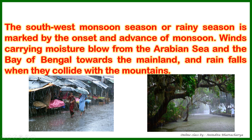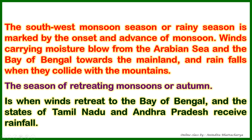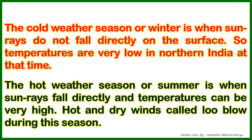The southwest monsoon season or rainy season is marked by the onset and advance of monsoon winds carrying moisture. They blow from the Arabian Sea and Bay of Bengal towards the mainland, and rain falls when they collide with the mountains. The season of retreating monsoon, or autumn, is when the winds retreat to the Bay of Bengal and the states of Tamil Nadu and Andhra Pradesh receive rainfall.